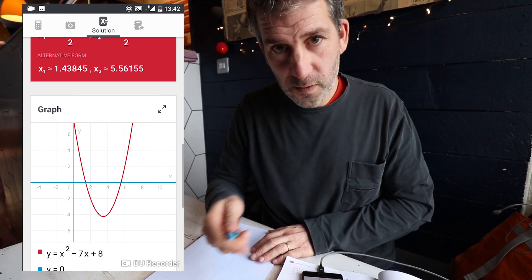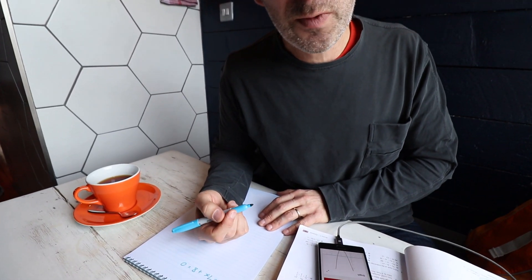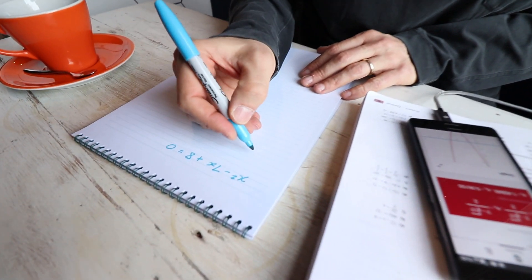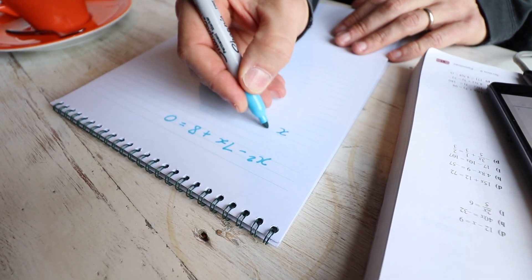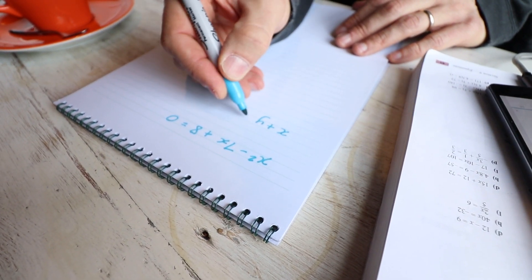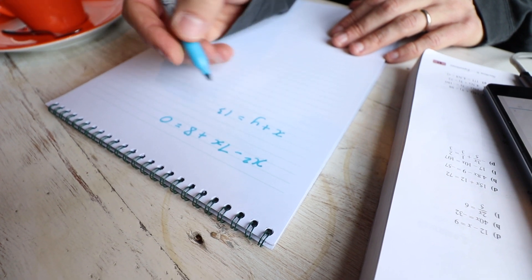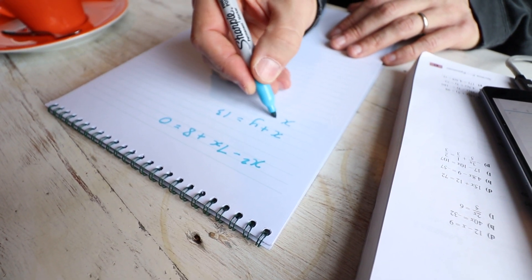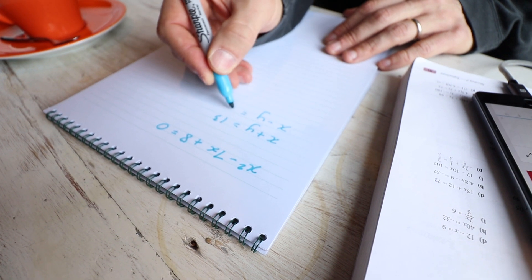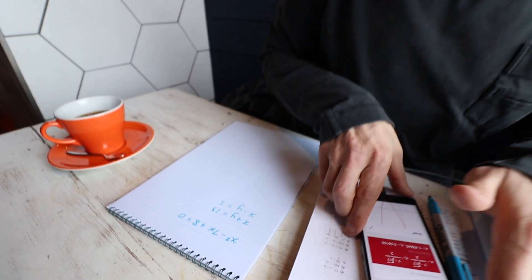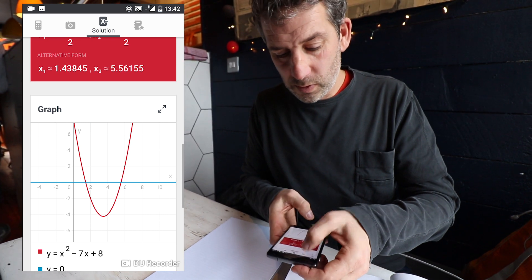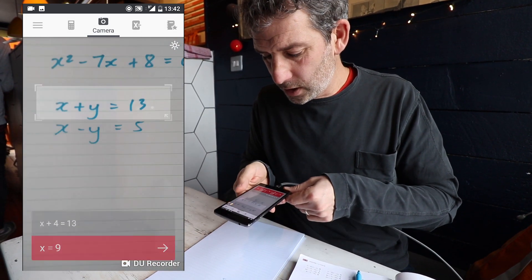I'm going to do two more. Firstly, I'm going to show you that it can do simultaneous equations. A simultaneous equation looks like this, where you've got two equations that individually you wouldn't be able to solve, but when you combine them, you have enough information to be able to solve that. Our American cousins call these systems of equations, I think. We call them simultaneous equations in the UK.